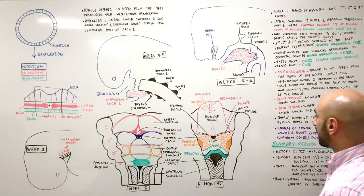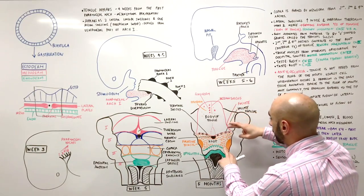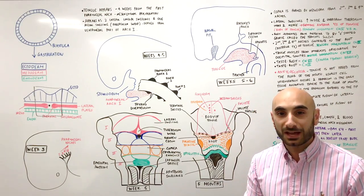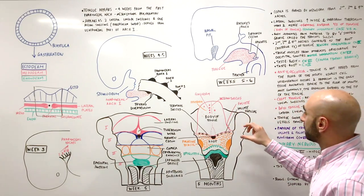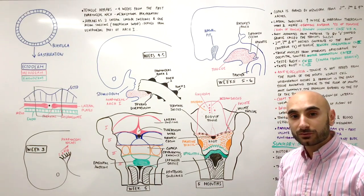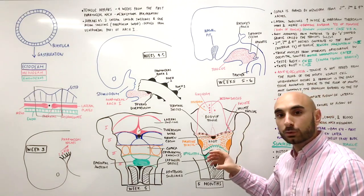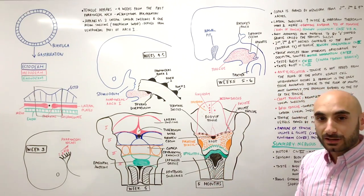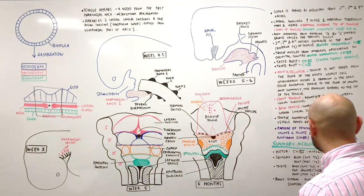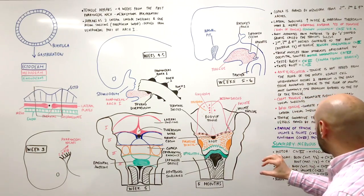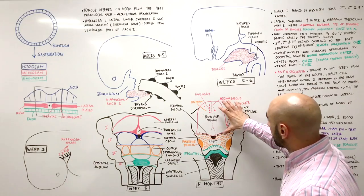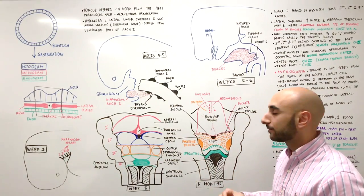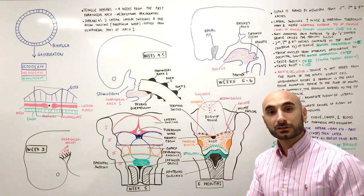Now for sensory innervation. The anterior two-thirds has different innervation to the posterior third, both in sensation of touch and in the special sense of taste. For touch, the anterior two-thirds is supplied by CN5, the trigeminal nerve — specifically the mandibular branch, V3, and more precisely the lingual branch. The posterior third is supplied by the glossopharyngeal nerve.